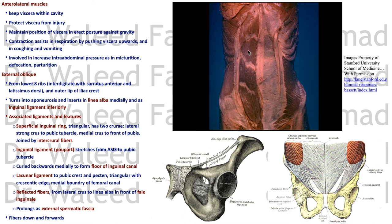The anterolateral muscles are big sheets of muscle, except in the midline where there is a long stripe of muscle on each side. The muscles keep organs in place, protect the viscera, and when they contract they increase intra-abdominal pressure, aiding micturition, defecation, and labor. This increased pressure also aids respiration by pushing the viscera upward during expiration to help the lungs expel air.